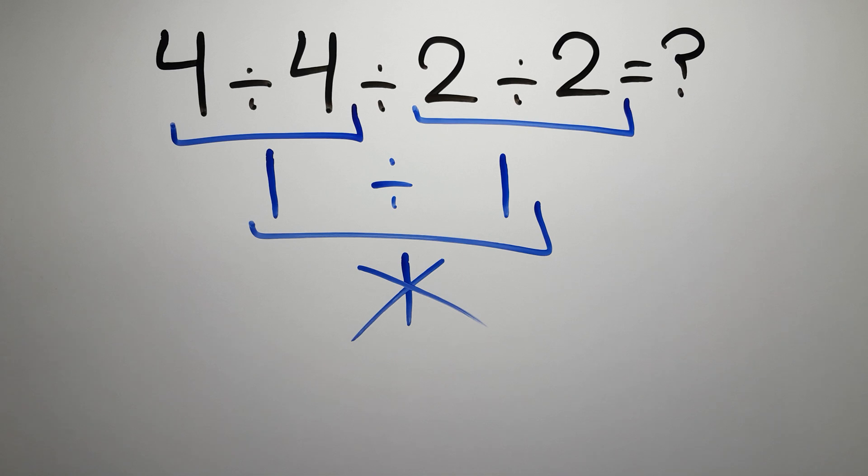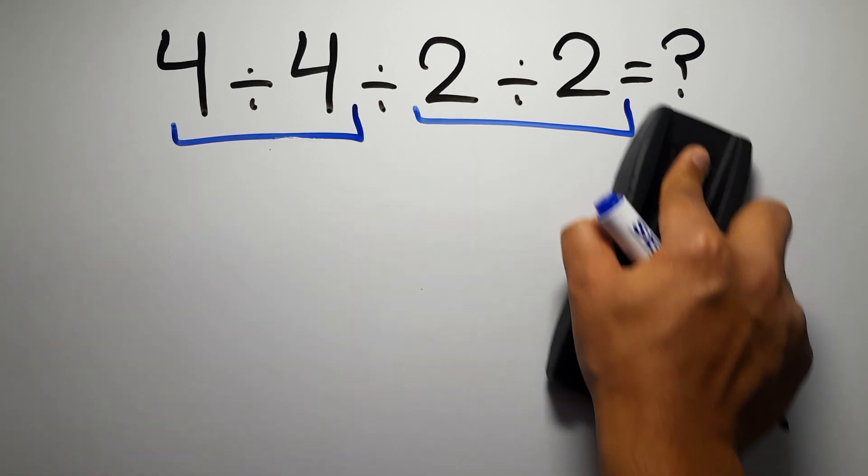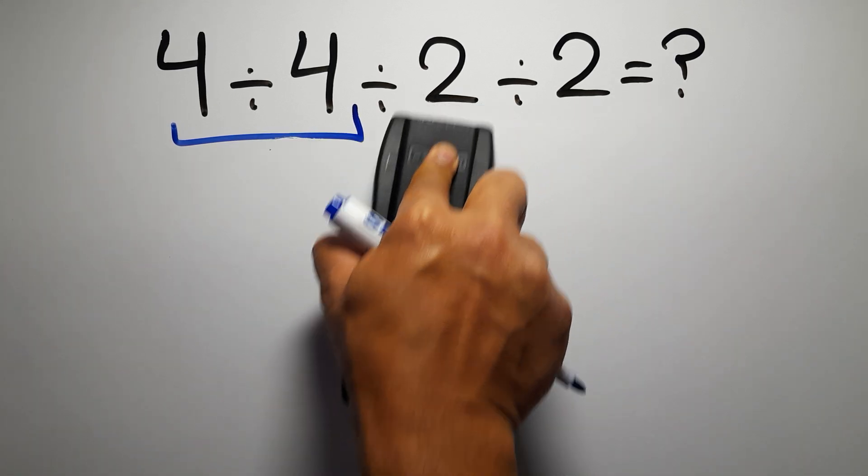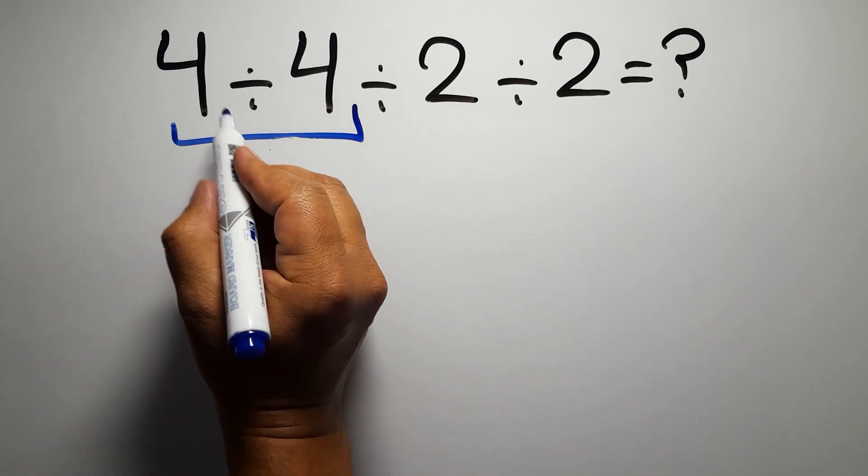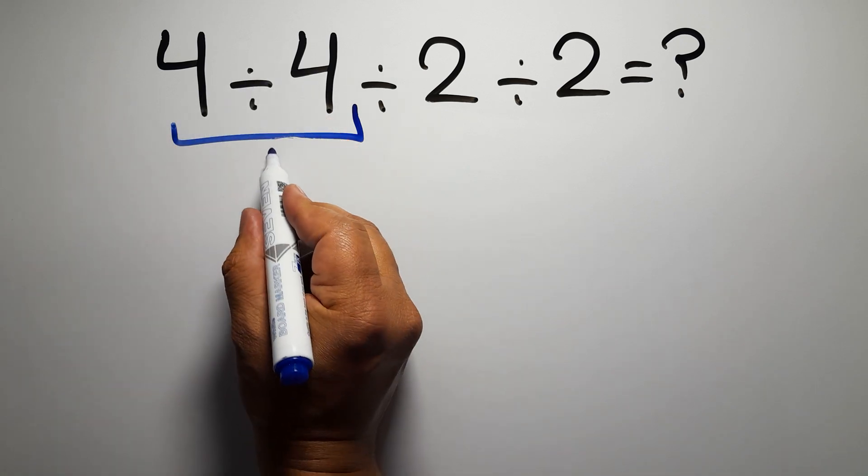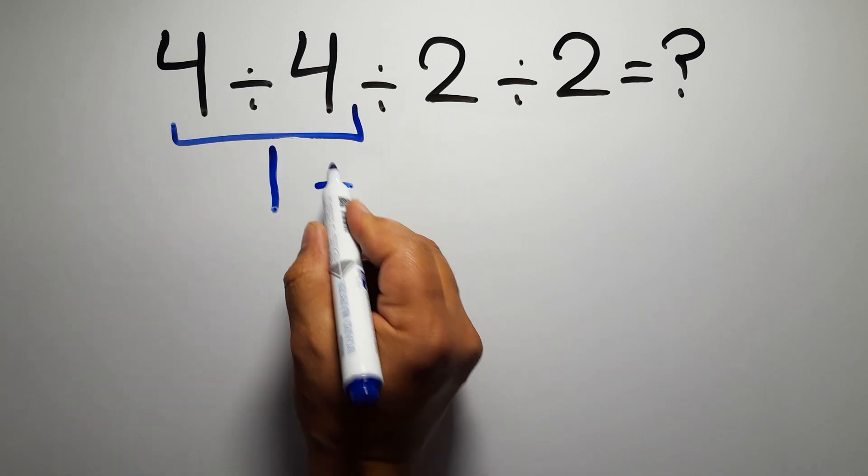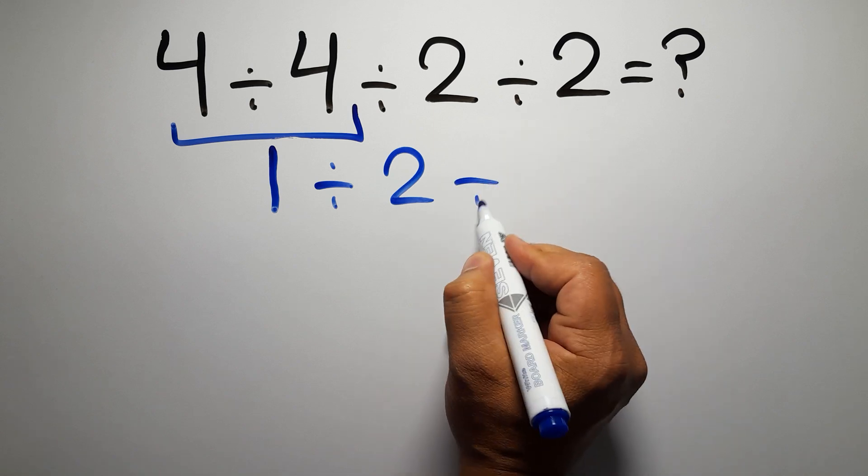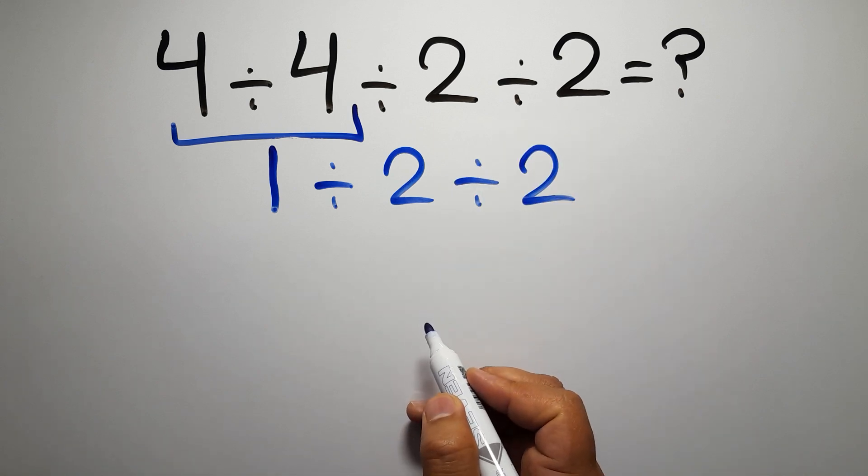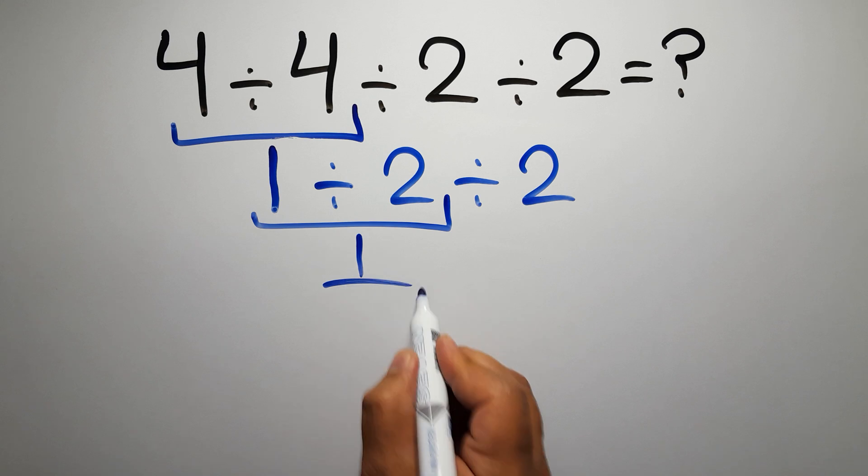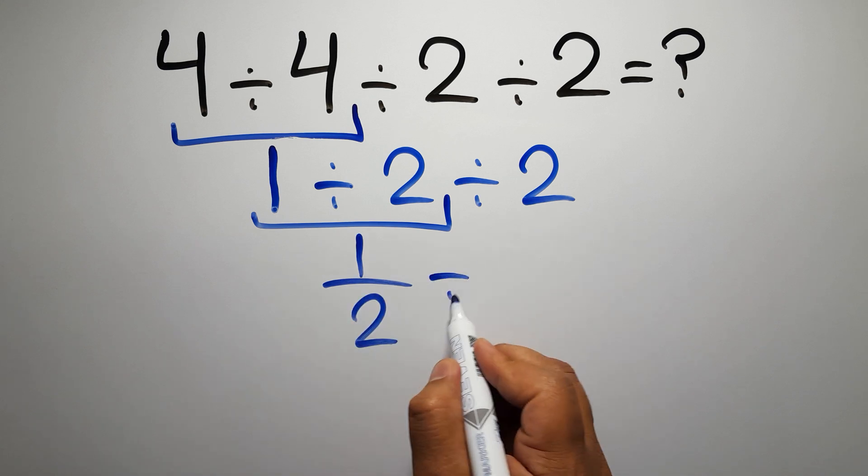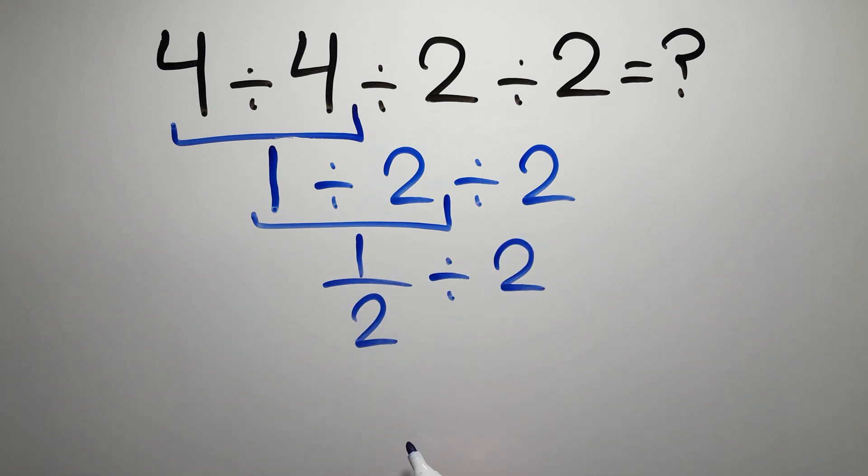So first this division: 4 divided by 4 is just 1. So 1 divided by 2, then divided by 2. 1 divided by 2 can be written as 1 over 2, then divided by 2.